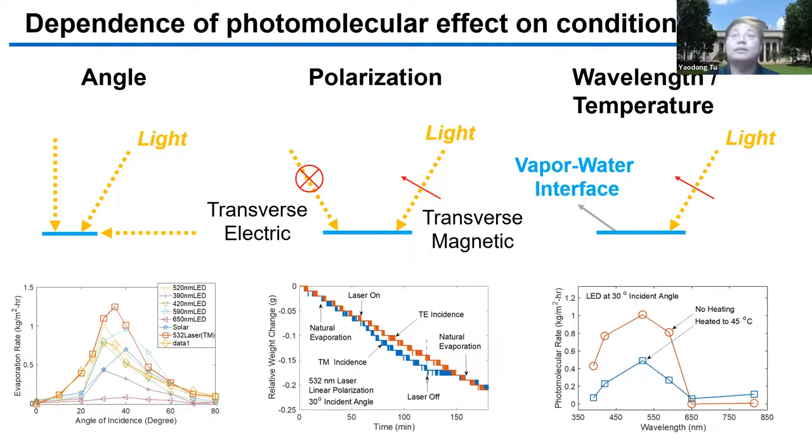We also find the wavelength dependence effect. You can see the evaporation rate will peak around the green light and cut off at infrared light. We also find temperature effects. At high temperature, the evaporation rate is lower. Based on this, we believe there is some competition between the thermal evaporation and the photomolecular evaporation.